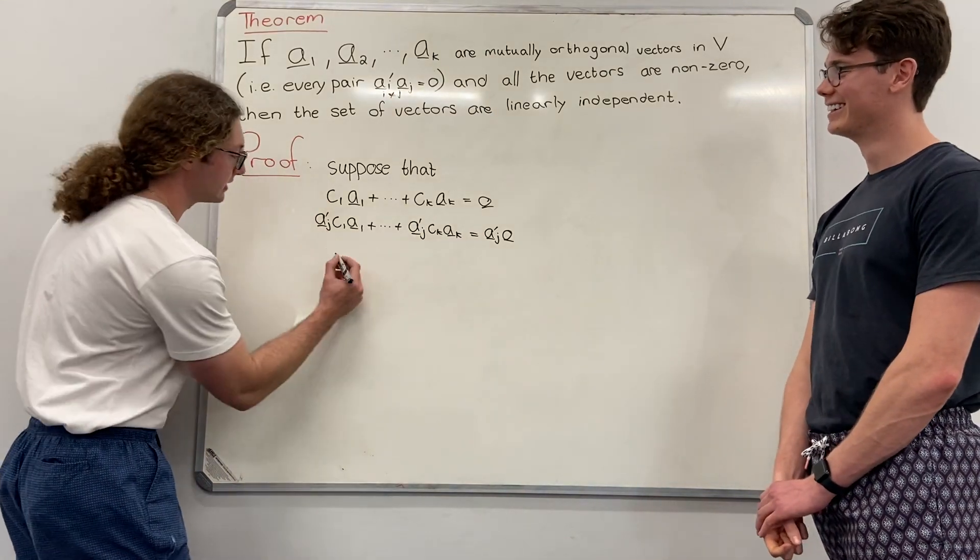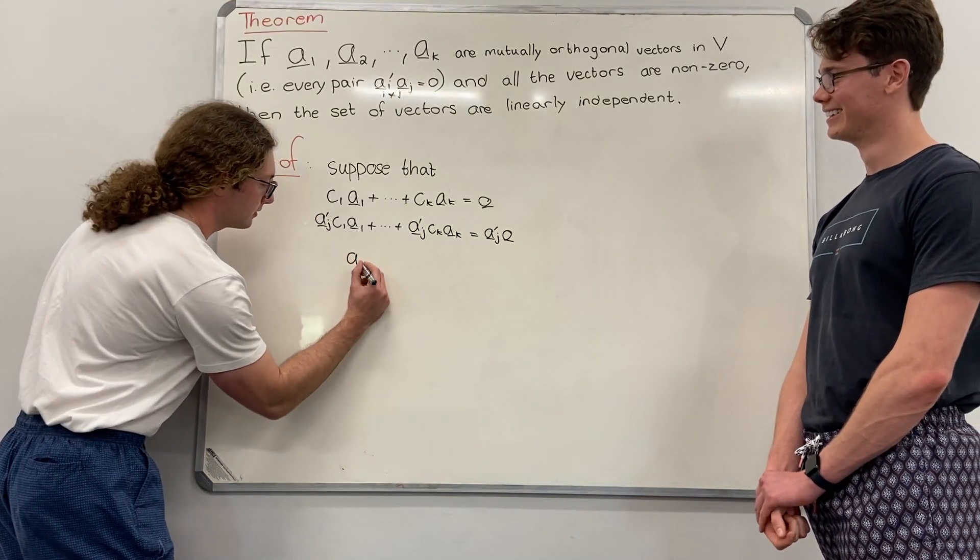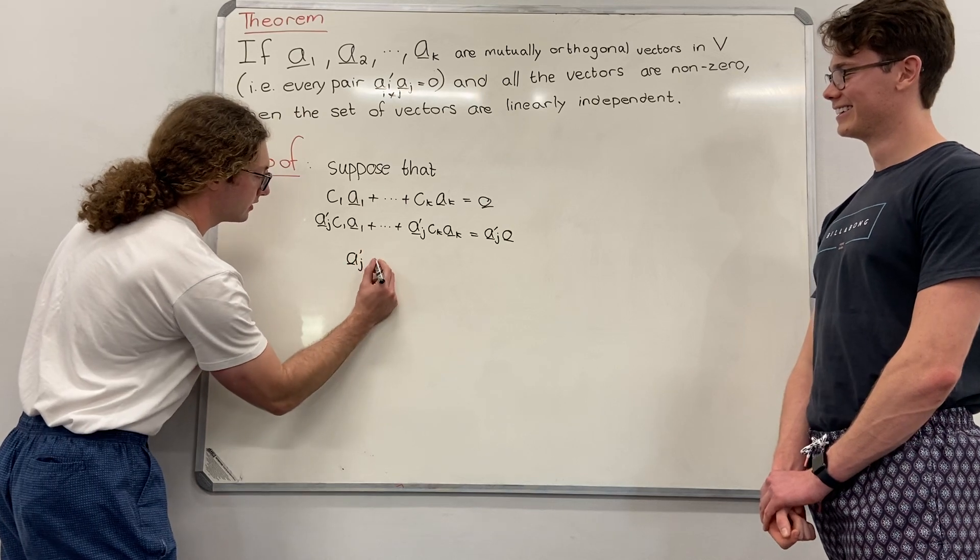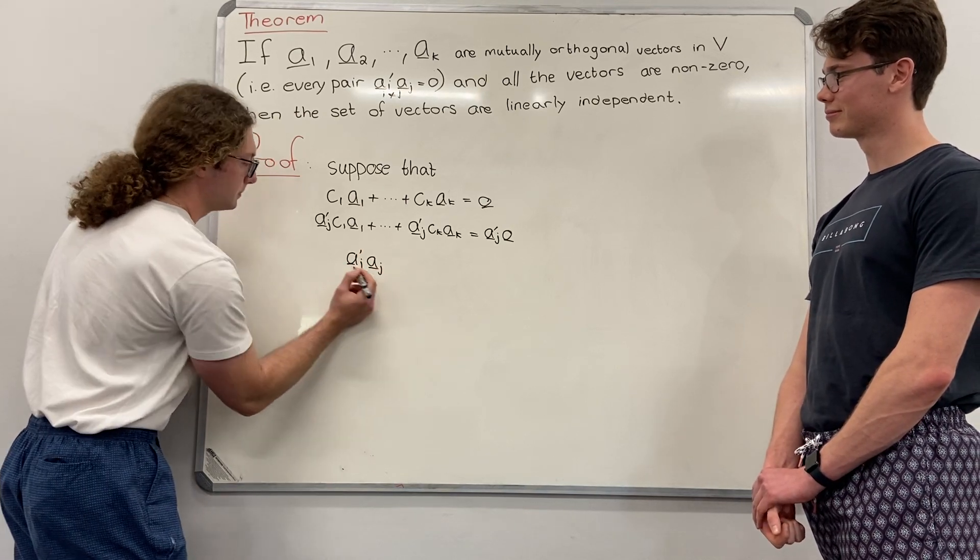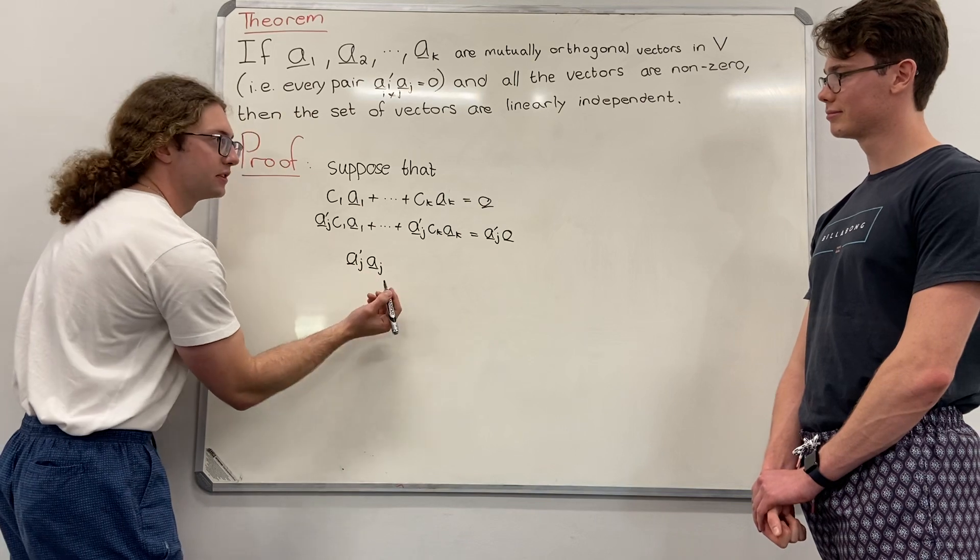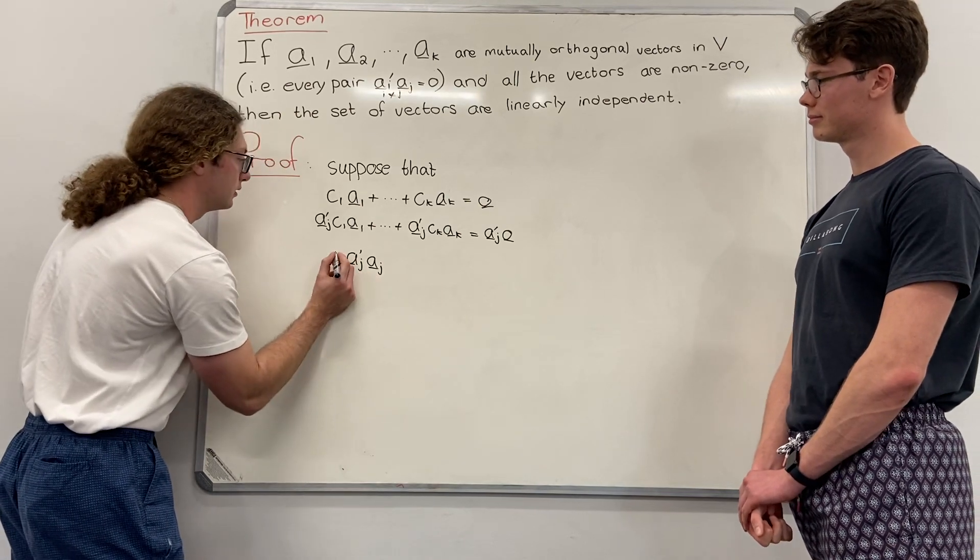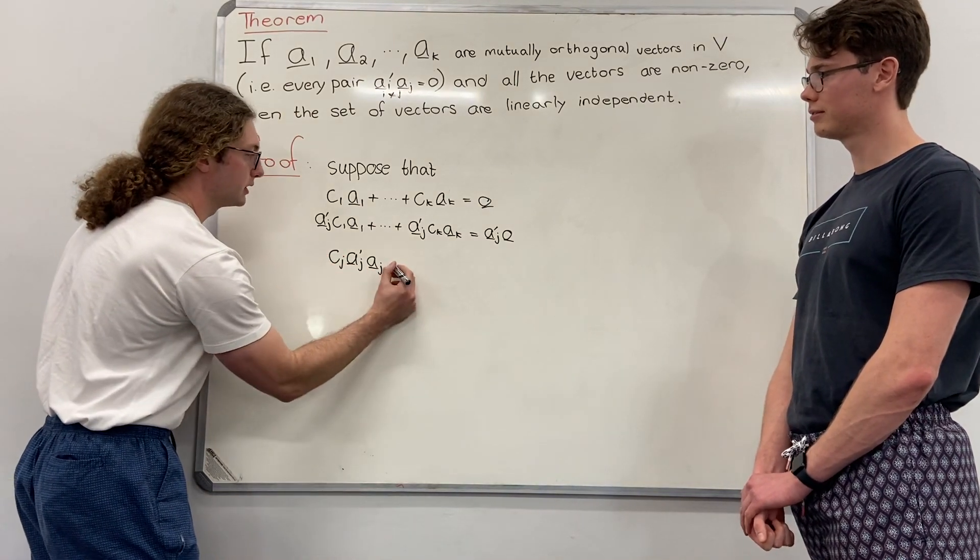From here, we can clearly see that if the A_j is equal for all j's not equal to each other... Don't forget the C. Don't forget the C's.